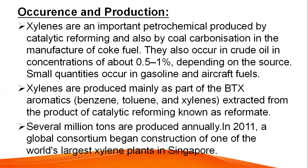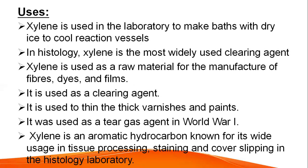Occurrence and production: xylenes are an important petrochemical produced by catalytic reforming and also by coal carbonization in the manufacture of coke fuel. They also occur in crude oil at concentrations of about 0.5 to 1 percent depending on the source. Small quantities occur in gasoline and aircraft fuels. Xylenes are produced mainly as part of the BTX aromatics — benzene, toluene, and xylene — extracted from the product of catalytic reforming known as reformate. Several million tons are produced annually. In 2011, a global consortium began construction of one of the world's largest xylene plants in Singapore.